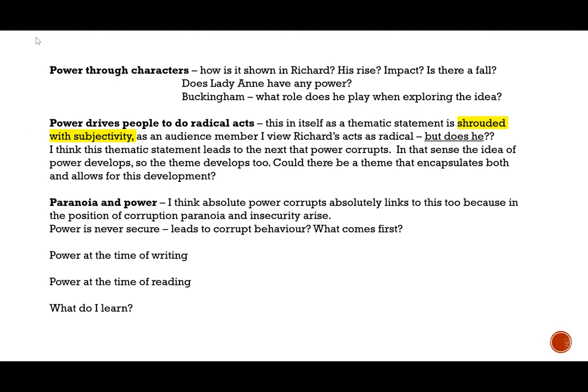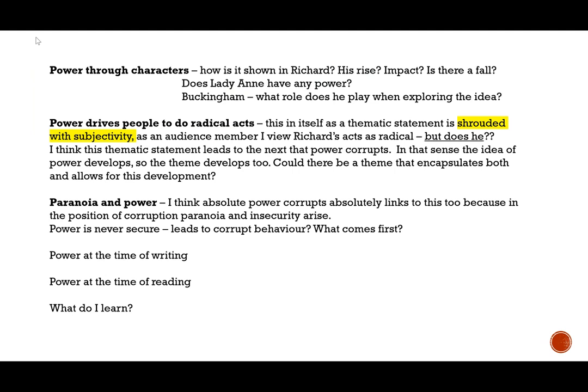Me trying to evaluate my own thing: when thinking about power, I found going back to events was hard, but if I thought about the characters then the events came easier. I thought about power as shown through Richard and his rise to power, the impact of power, and if there was a fall. I think when he goes into battle — 'a horse, a horse, my kingdom' — it does show a fall. And when the ghosts come at the end, being so pro-Richmond and so anti-Richard, that reflects a fall in his character. Does Lady Anne have any power — is she submitting power to be with him?